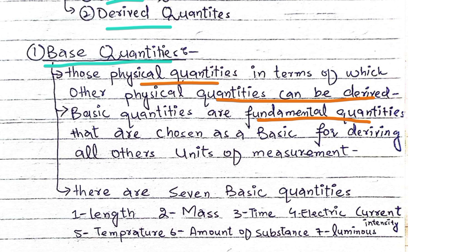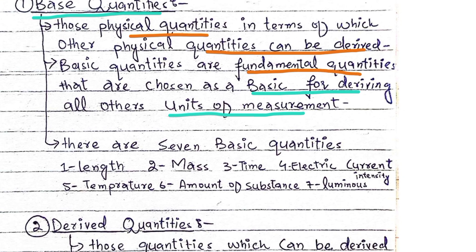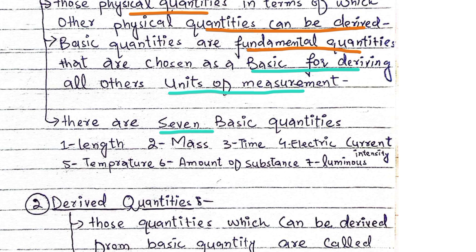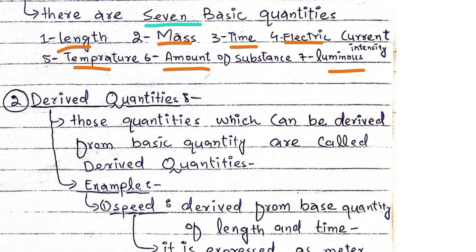The basic physical quantities include: length, mass, time, electric current, temperature, amount of substance, and luminous intensity. These seven are the basic physical quantities.